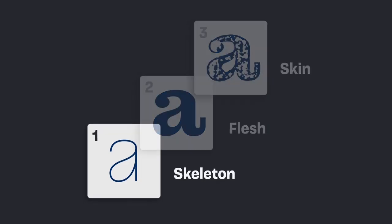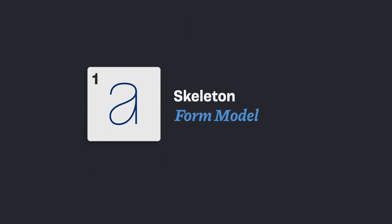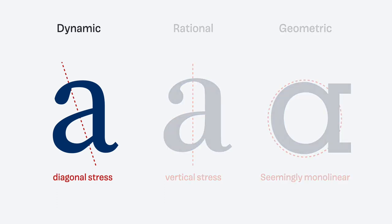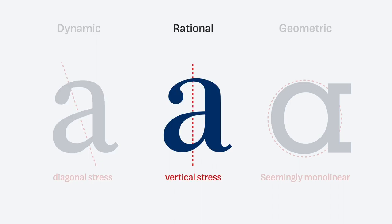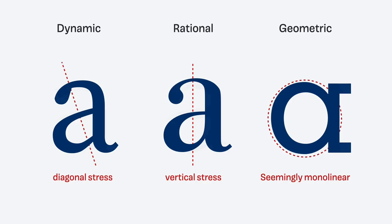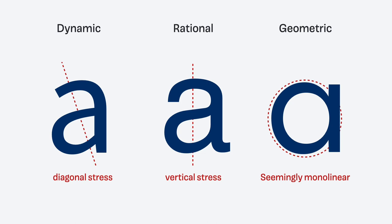The first of the three layers is the form model, and within it there are three kinds of shapes you can find in letters: a dynamic, a rational, and a geometric form model. The dynamic model has a slight angled stress. The rational form model has vertical stress, meaning the strokes expand to the side. The geometric form model is seemingly monolinear. You should also pay attention to how open or closed the shapes are — the dynamic form model has open shapes.